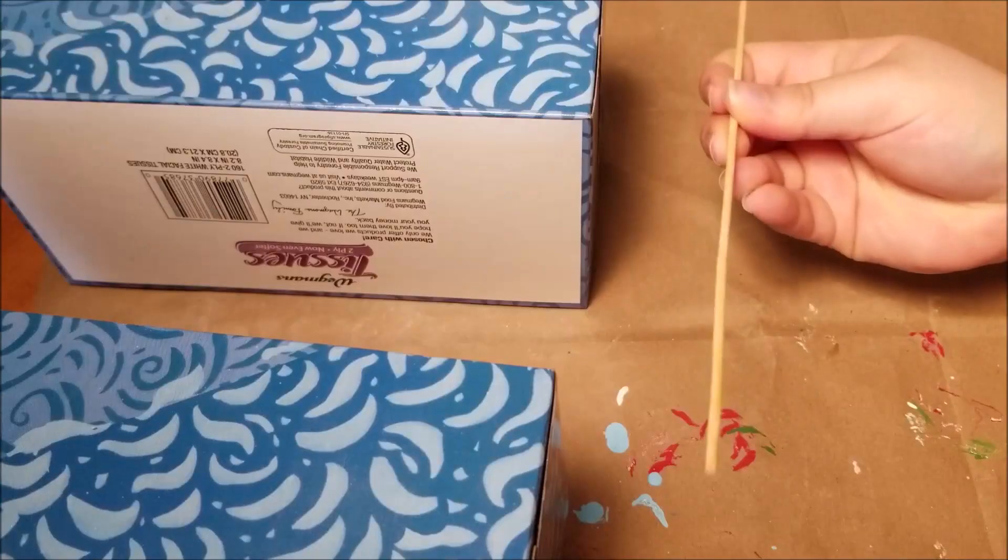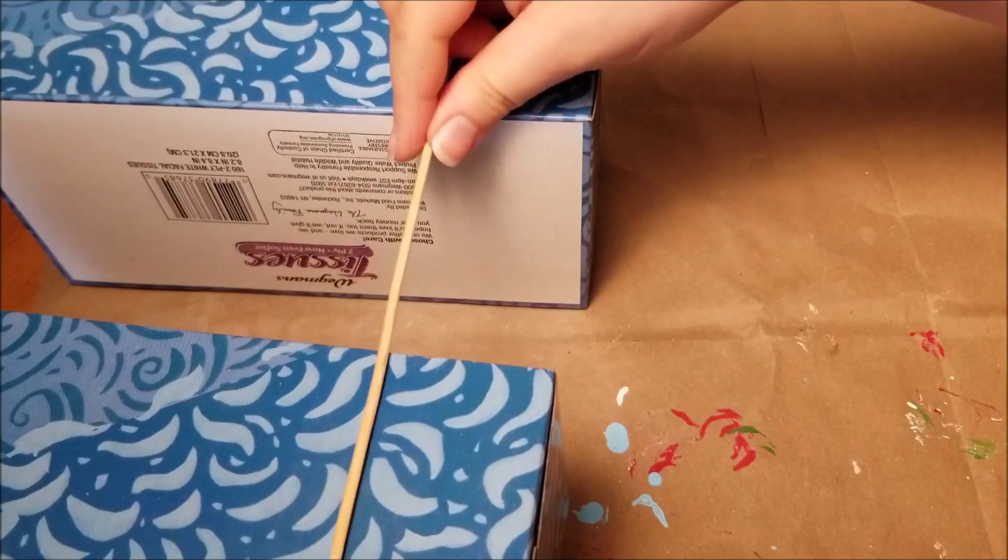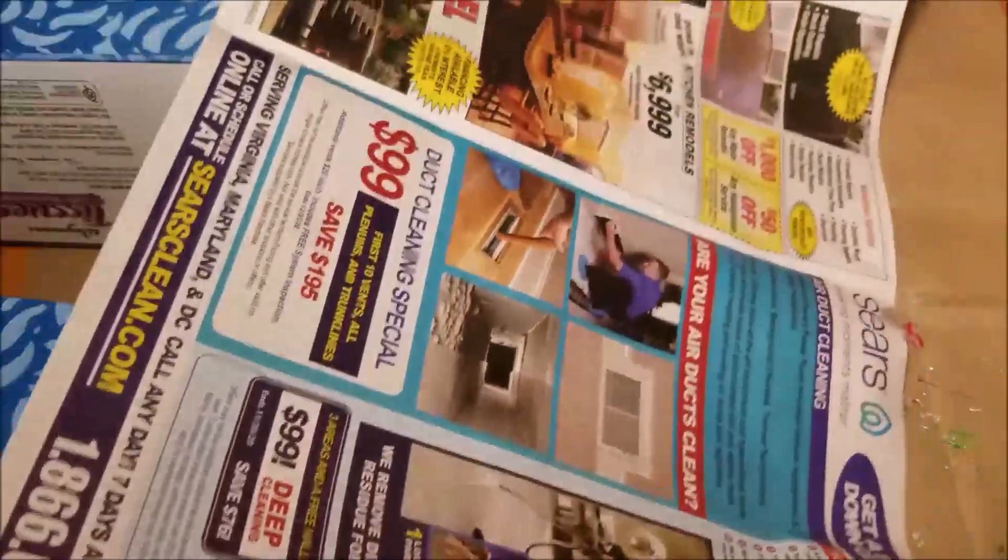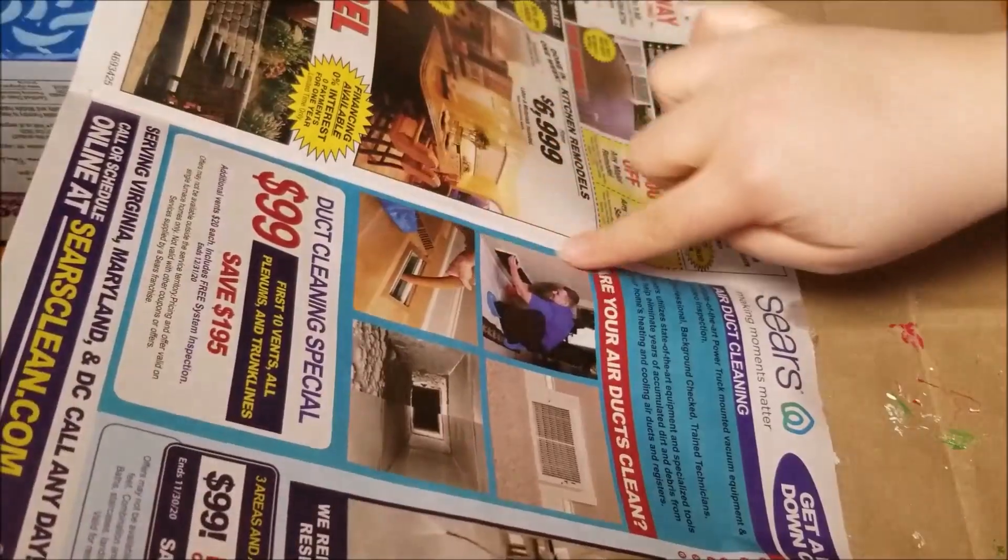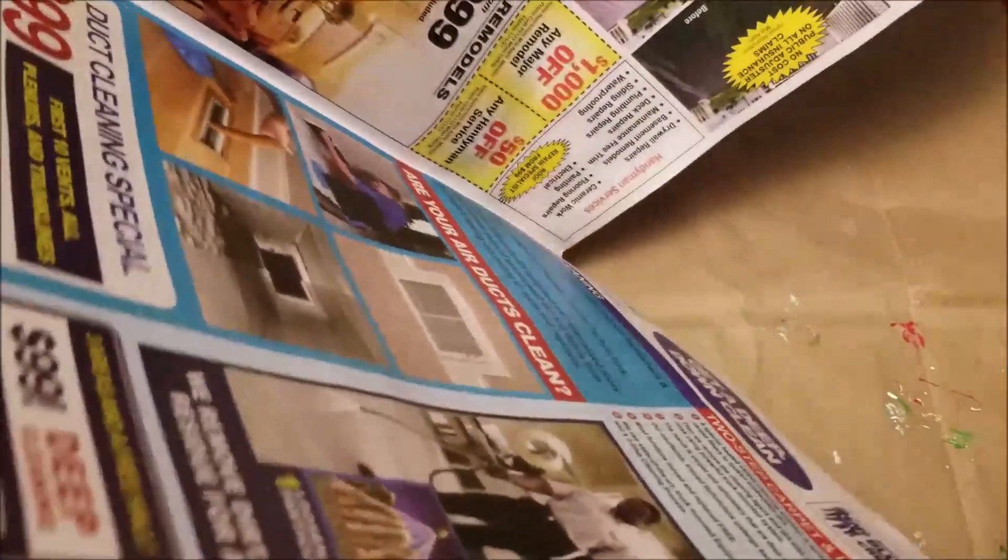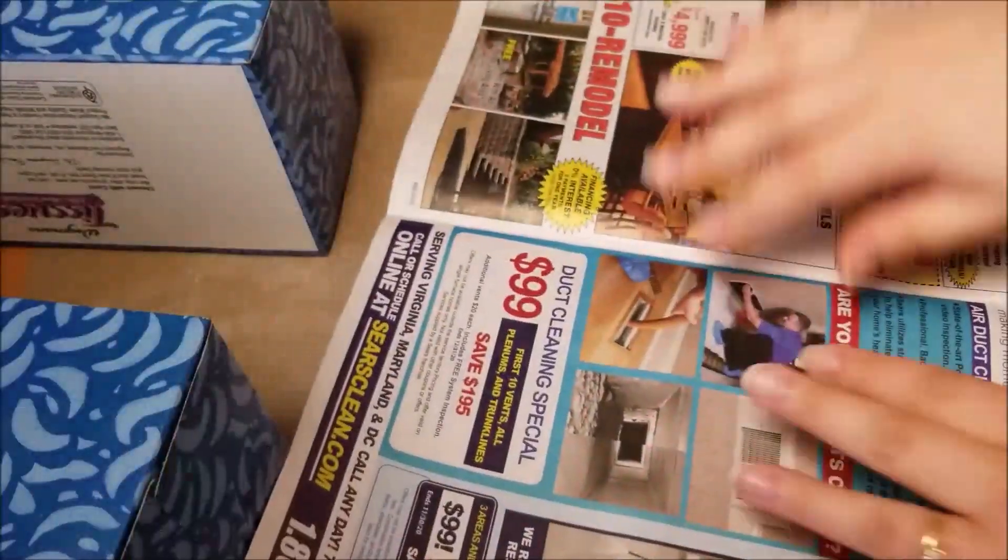I'm using two tissue boxes and some barbecue skewers to hang the statues to dry. I'm also using some junk mail to catch any glitter and easily return any leftover back into the bottle. Each color gets its own piece of paper so the colors don't get mixed up.